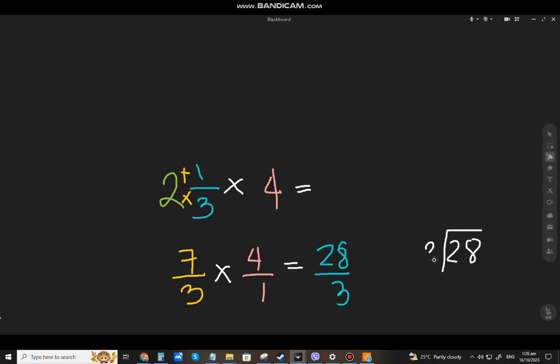So, 28, divide by 3. How many 3s in 28, that will be 9. 9 times 3, that will be 27. 28 minus 27, that will be 1. The remainder is 1.